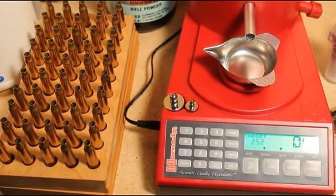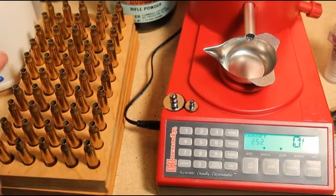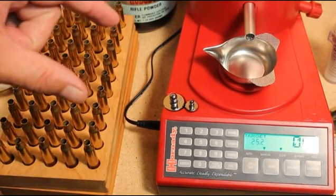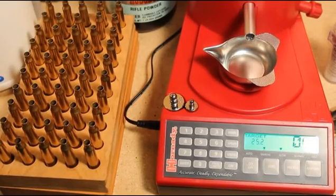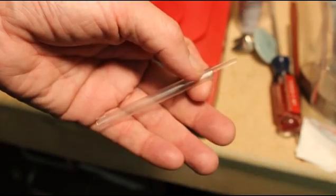Oftentimes, we'll get overcharges because of the big stick powders. How do you prevent that from happening with the Hornady unit? And here's how you do it.